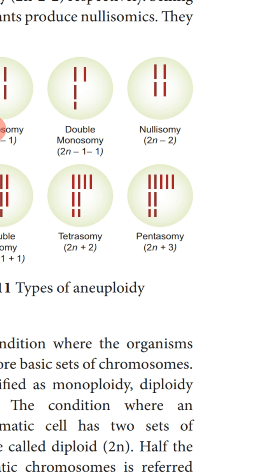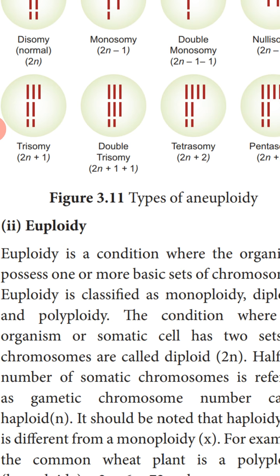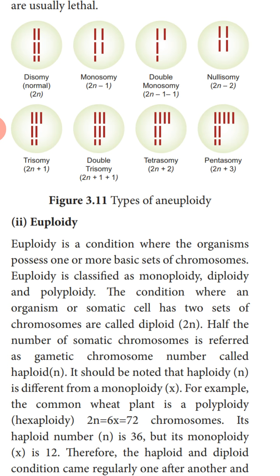So aneuploidy is the alteration in the number of chromosomes — if one or more chromosomes are added or removed, it is called aneuploidy. Next, the second type of ploidy is euploidy. Euploidy is a condition where the organism possesses one or more basic sets of chromosomes. The basic set is the haploid number of chromosomes of an organism. Euploidy is classified as monoploidy, diploidy, and polyploidy.